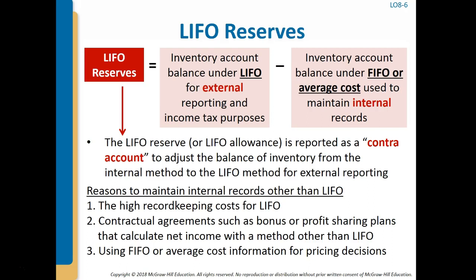Many companies use LIFO for external reporting and income tax purposes but maintain their internal records using FIFO or average cost. Generally, the conversion to LIFO from the internal records occurs at the end of the reporting period. Some companies enter the conversion adjustment — the difference between the internal method and LIFO — directly into the records as a contra-account to inventory. This contra-account is called the LIFO reserve or the LIFO allowance. Reasons for maintaining internal records differently include high record keeping costs for LIFO, contractual agreements such as bonus or profit sharing plans, and using FIFO or average cost information for pricing decisions.